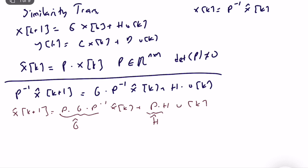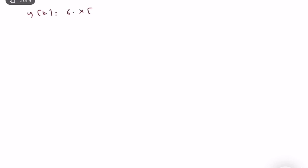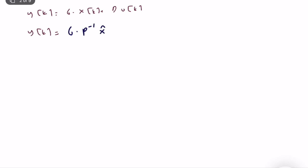Now let's figure out the output equation y(k). We're not changing the output — we're only changing the state definition. So y(k) = C·x(k) + D·u(k) = C·P⁻¹·x̂(k) + D·u(k). So Ĉ = C·P⁻¹ and D̂ = D. The D̂ matrix is the same because the direct connection between input and output does not depend on the state definition.